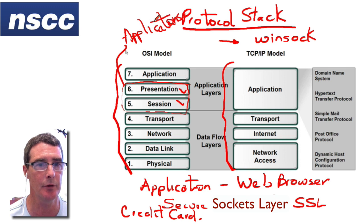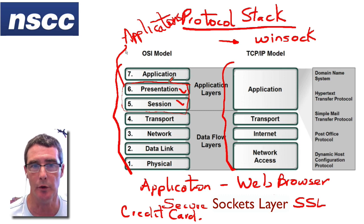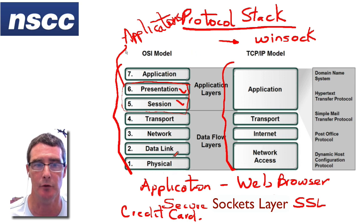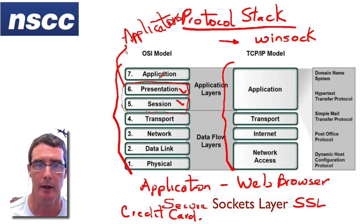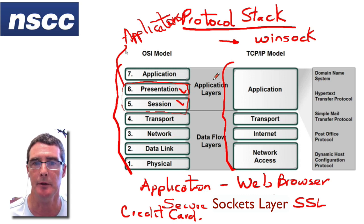Although we break out these functions into nice, neat layers, it is possible for some of the functions of these layers to be done elsewhere — often in the applications themselves. Don't think that it's always a strict layered model where all functions are done in the protocol stack. They can be done in different parts of the operating system or application software. But as a model for learning about networks, it's easiest to understand network communications using this layered model.